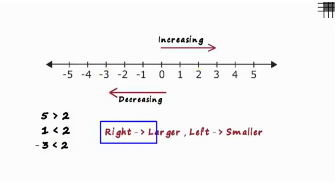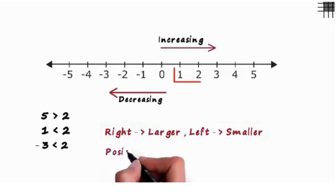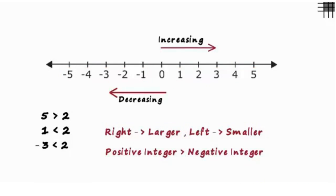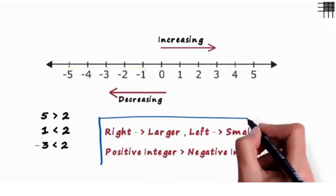Here's a very basic thing to remember. Right means larger and left means smaller. And this helps us understand a simple concept. Every positive integer is greater than any negative integer. It's because all positive integers are to the right of any and every negative integer.